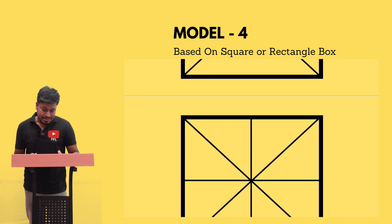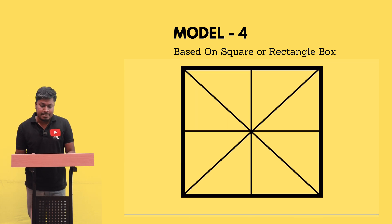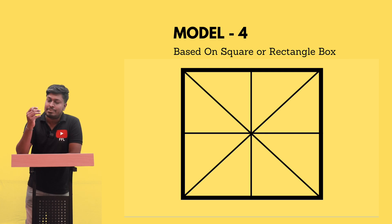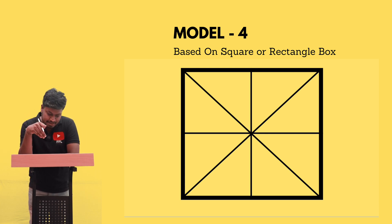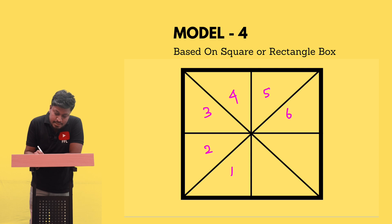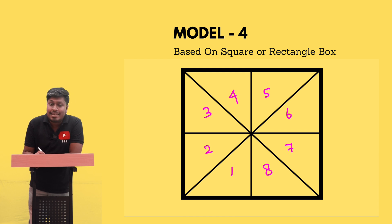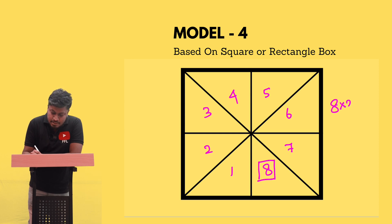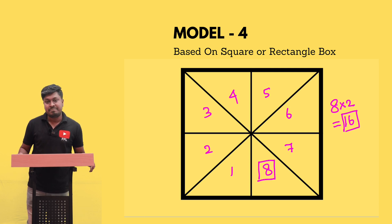Here is a railway exam question from 2014 or 2015: how many triangles are in the given figure? Just put down the numbers: one, two, three, four, five, six, seven, eight. The highest number is eight. Multiply eight by two — that gives sixteen. There are sixteen triangles in the given image.